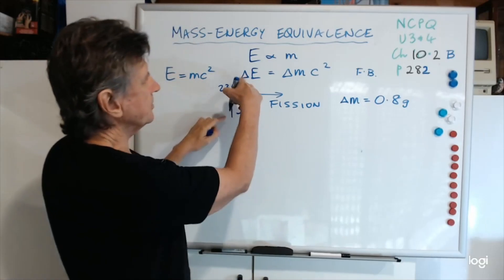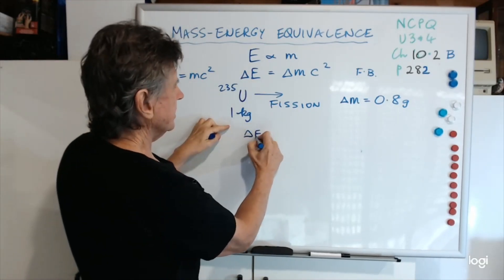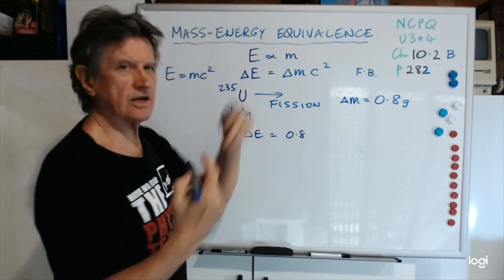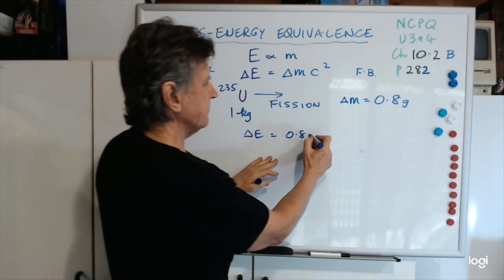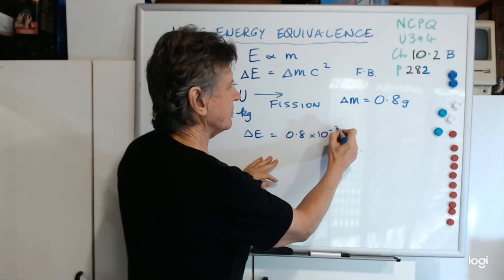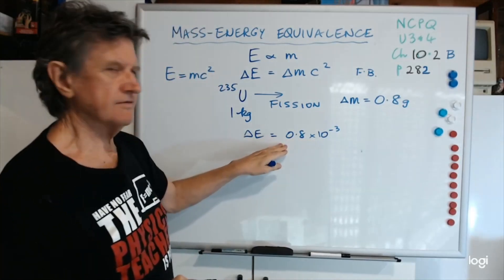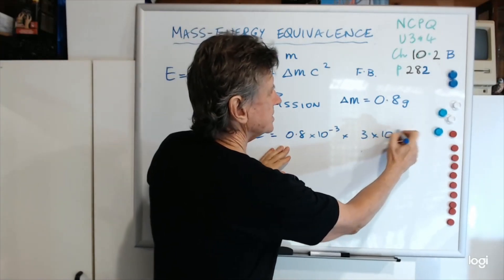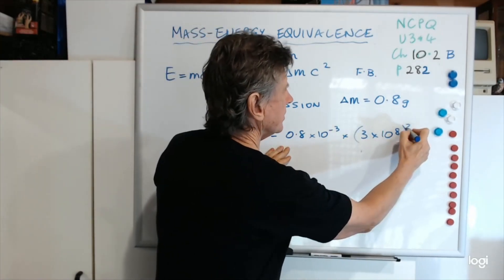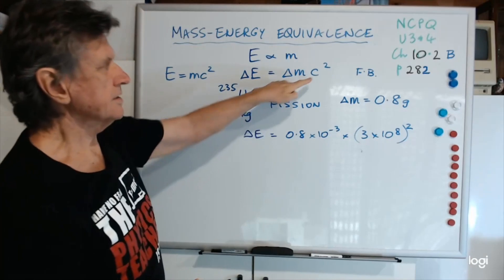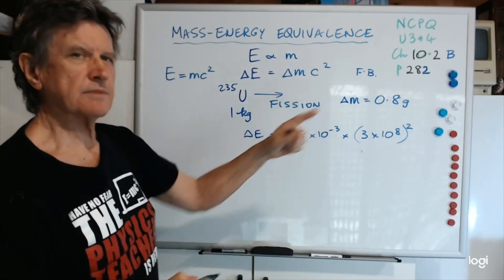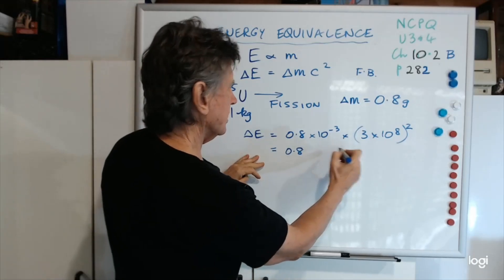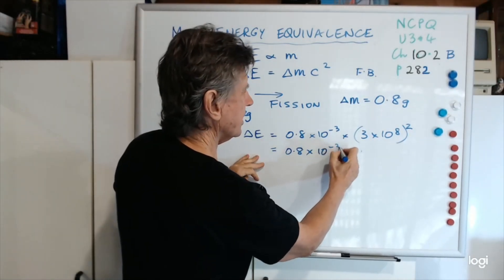If we use our formula, delta E equals delta m, so that's 0.8, now that's in grams, so we need to convert that to kilograms, so that's by 10 to the negative 3, it's the same as dividing by 1000, times 3 by 10 to the 8 squared. So that's c squared. So, you multiply that out, and you'd get 0.8. I'll do this again just to show you how it works.